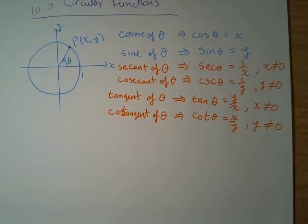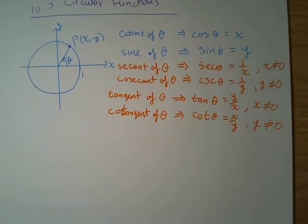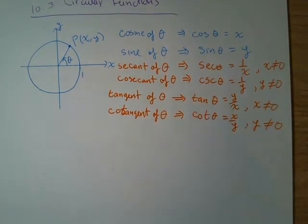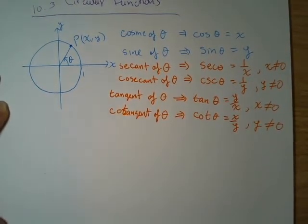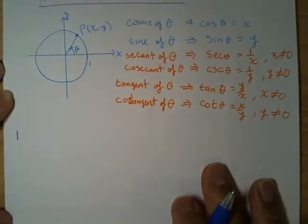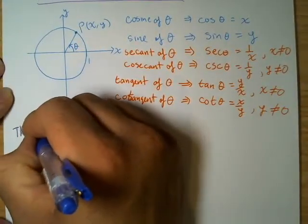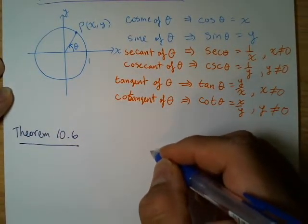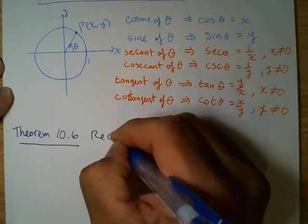So these are our six circular functions. They start from cosine and sine, and the rest are essentially reciprocals. We're going to introduce the reciprocal identities — this is Theorem 10.6 in our textbook — and then jump into evaluating values of cosecant, tangent, and the others.